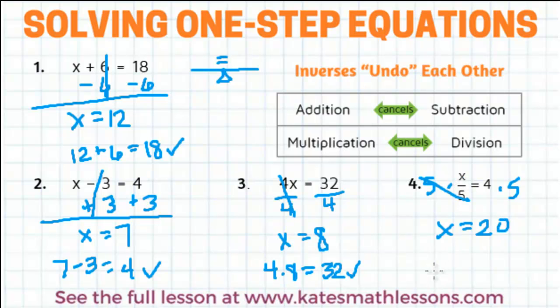I can check it by plugging the 20 back into the original problem. Does 20 divided by 5 equal 4? Yes. So I know this answer is correct too.